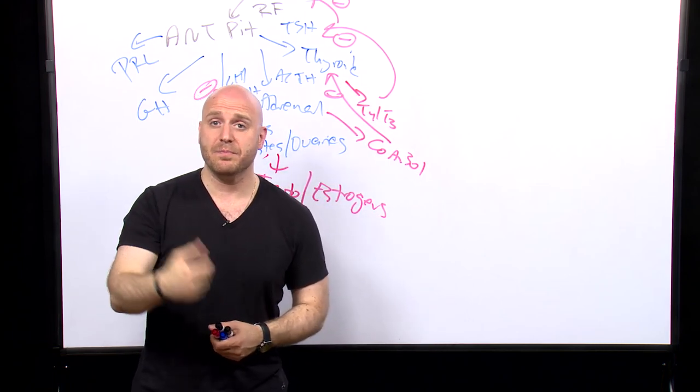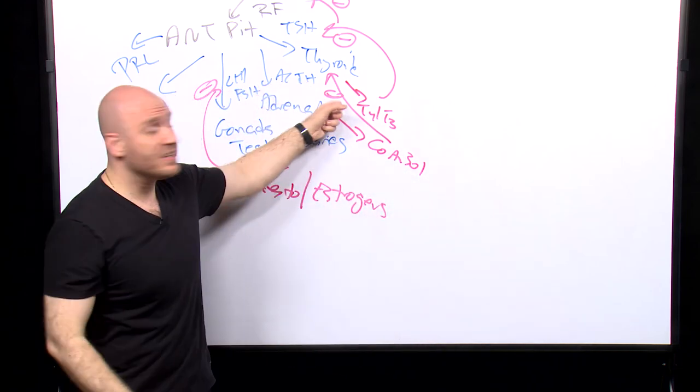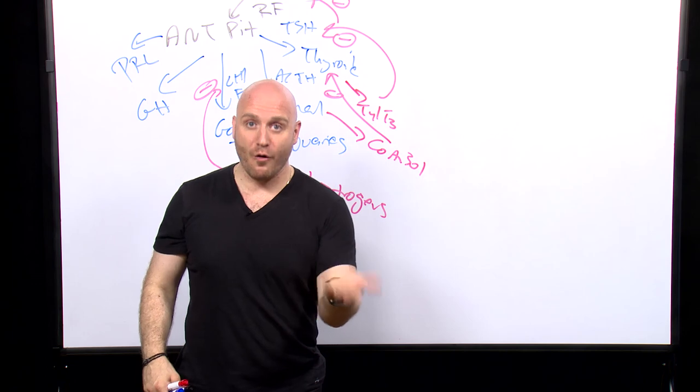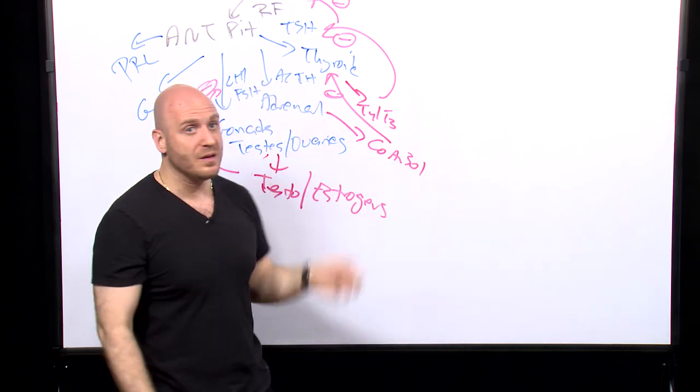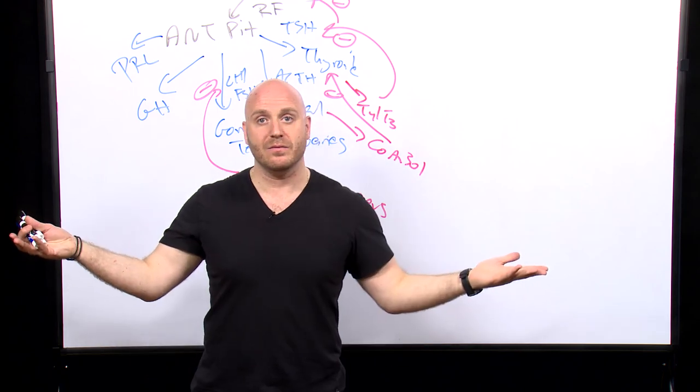Whenever we do special testing, like stimulations and suppressions, what we're really doing is challenging this axis. When you have a disease of overproduction, you're making too much of one of these. If you have a disease of deficiency, you're making too little. That's it. That's all it is, folks.